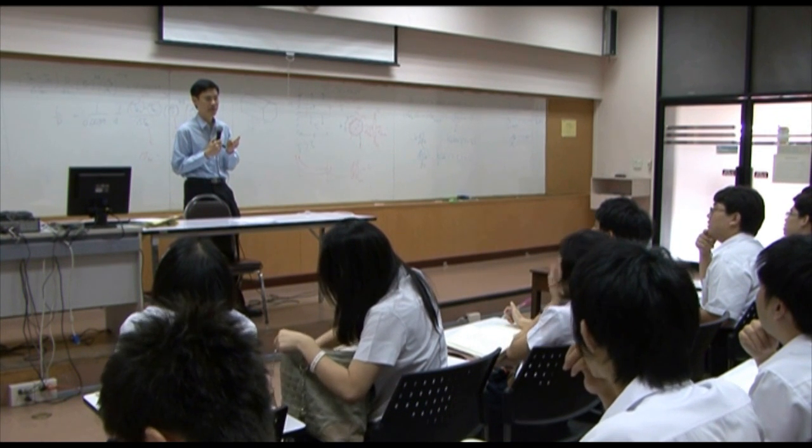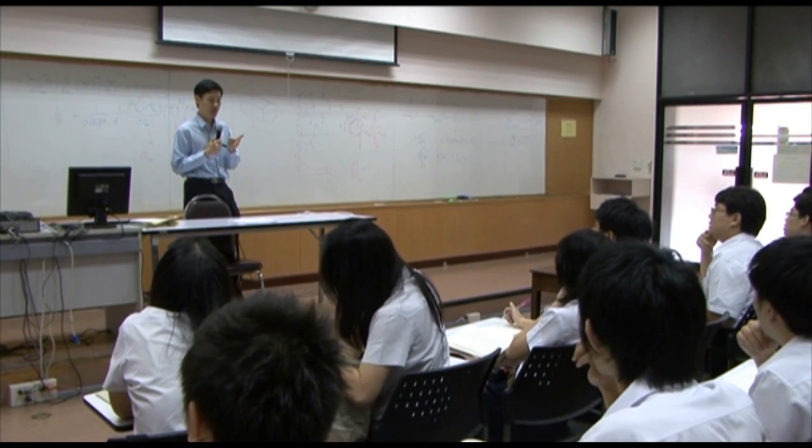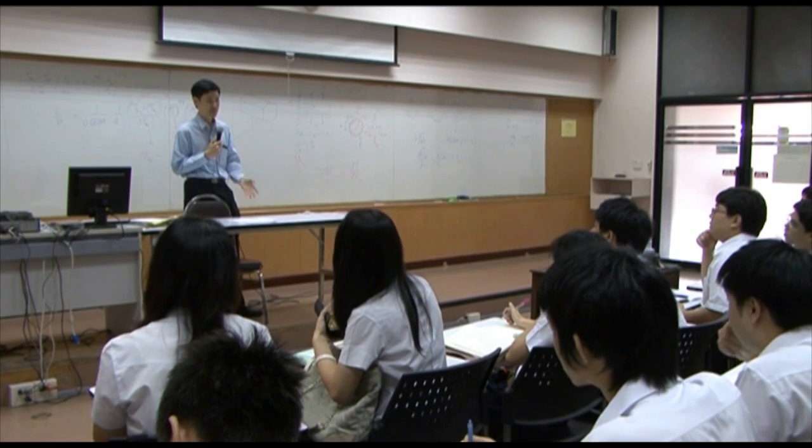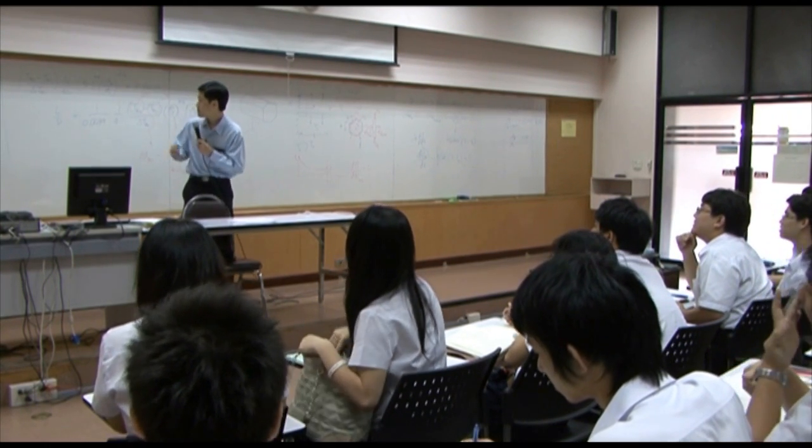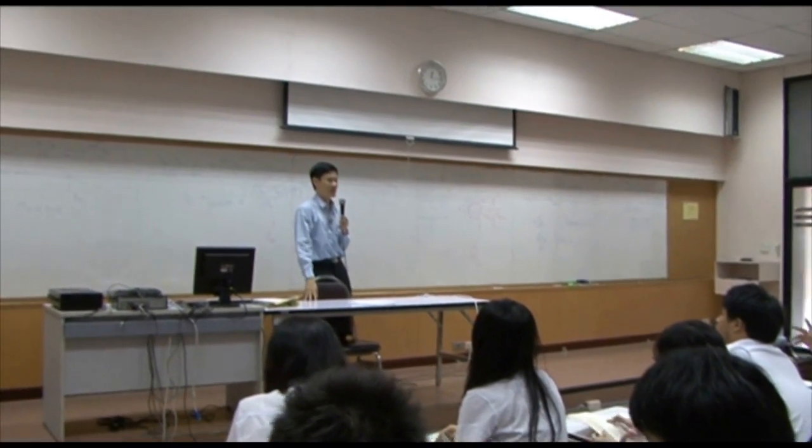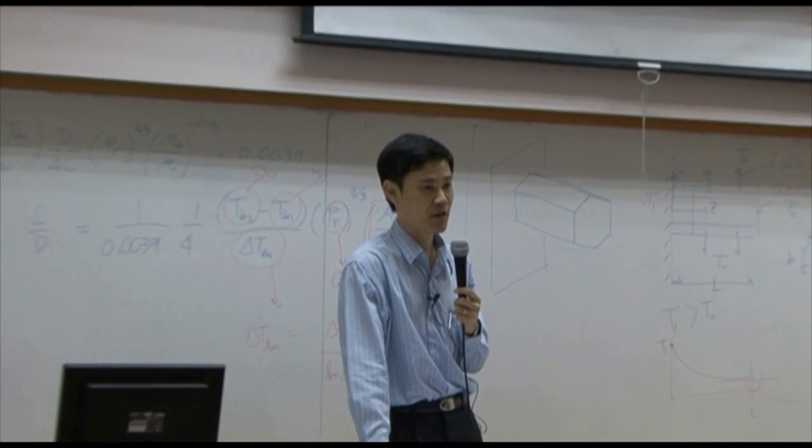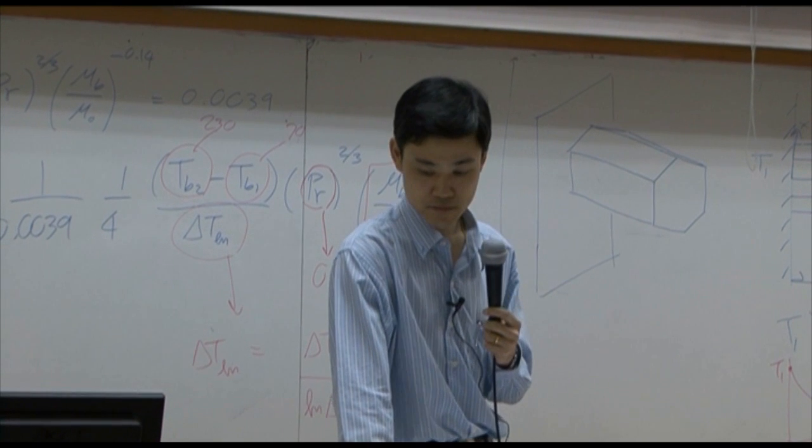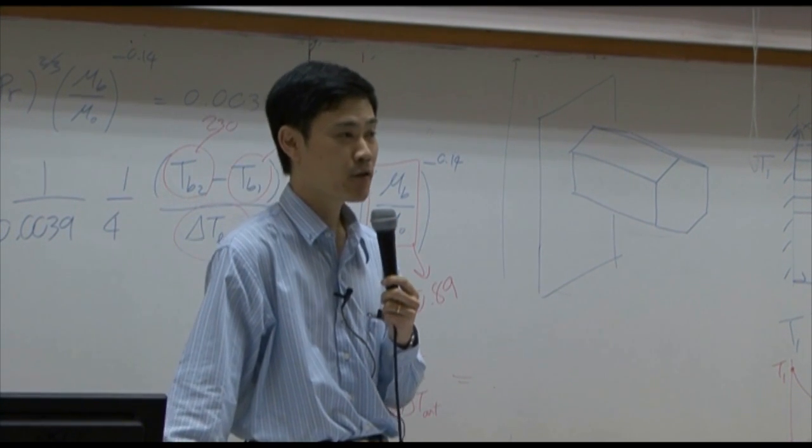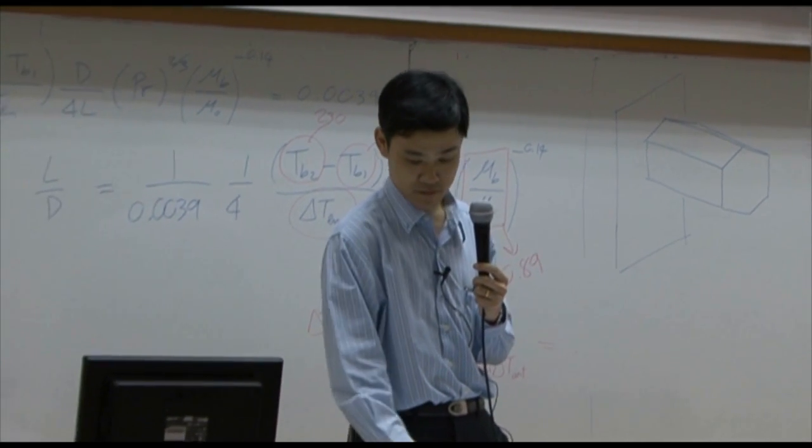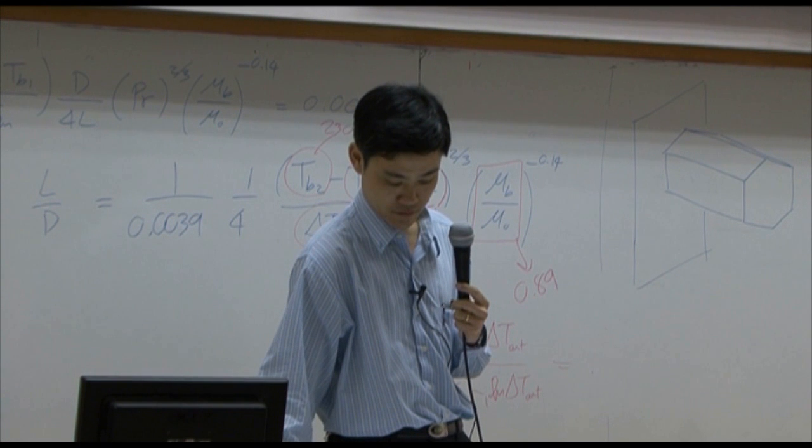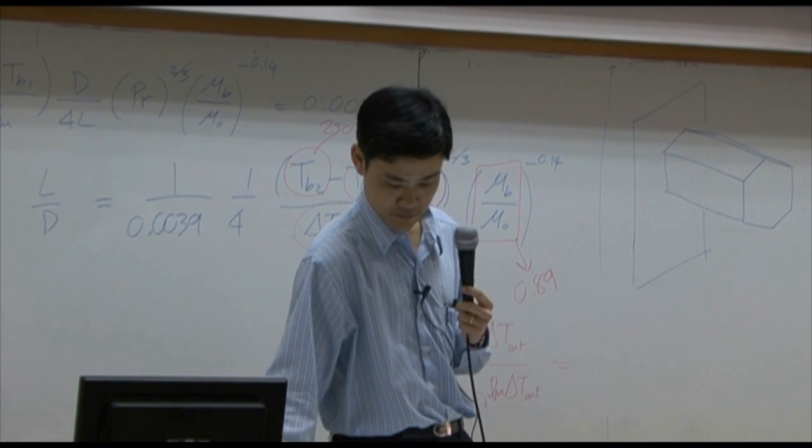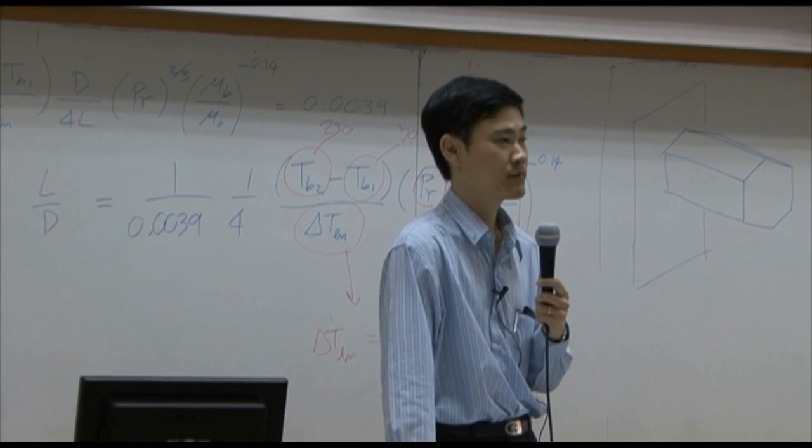What else do you need? The formula for Nusselt number will not be given. It's hD over K. Newton's law of cooling will not be given. What else?